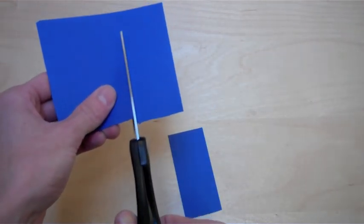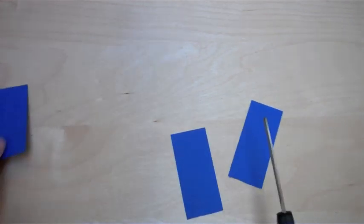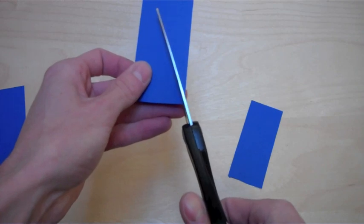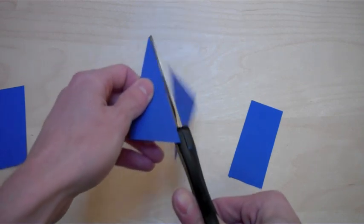Begin by cutting out the fins. I think the easiest way for students to do this is to cut rectangles and then make one cut from corner to corner to make triangles.